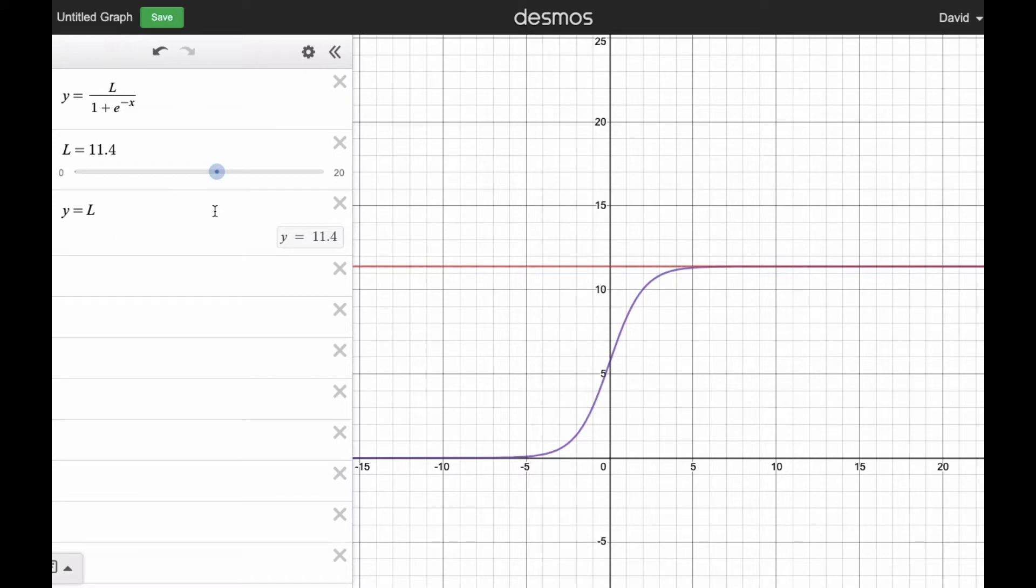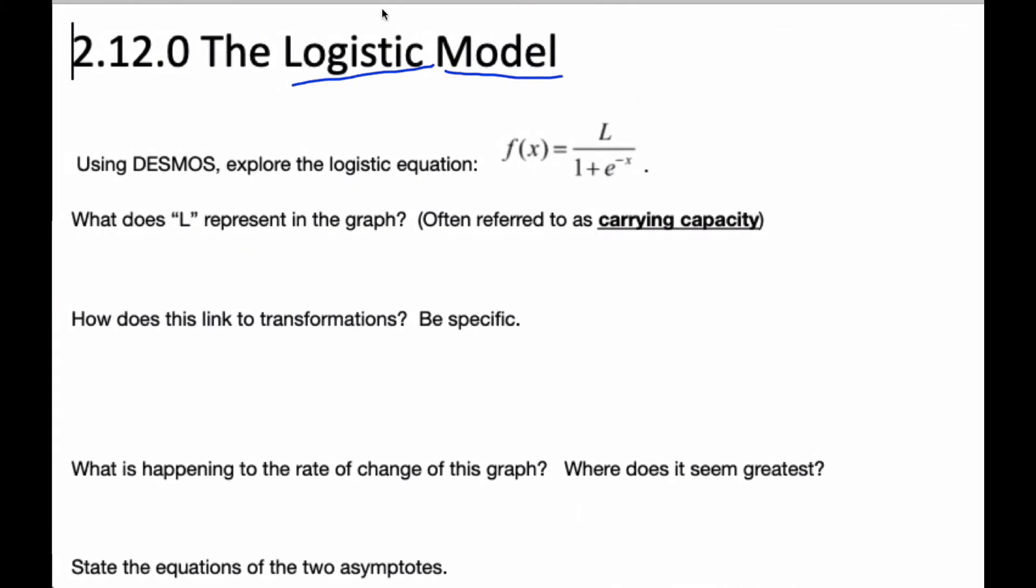And I put an asymptote on there, the L line up there, it is the upper asymptote. And so if you think about populations, this is like the maximum population could actually be. So maybe the planet Earth right now is right here. It hasn't hit its ultimate maximum carrying capacity. And so that's what L does. So L is telling us about the upper limit of the population size, often called the carrying capacity.